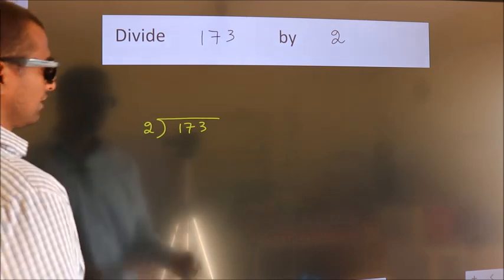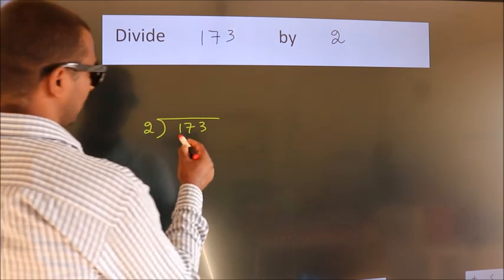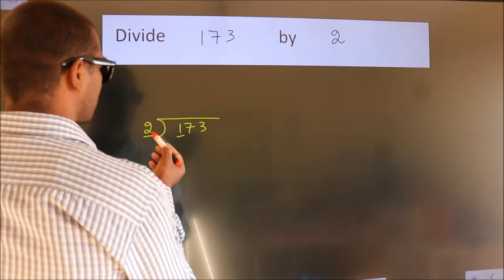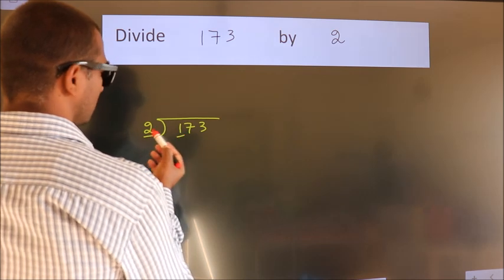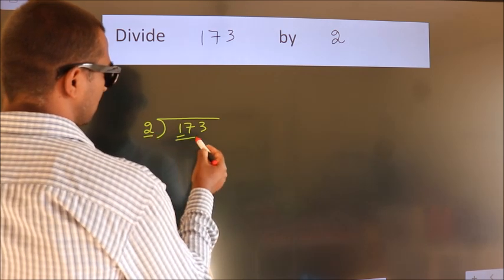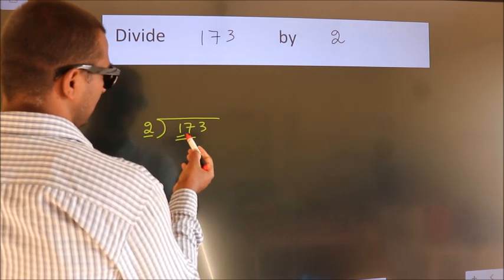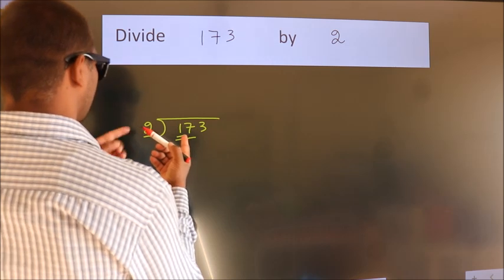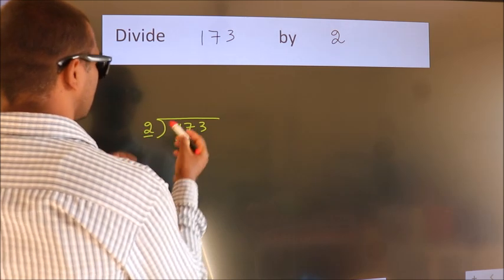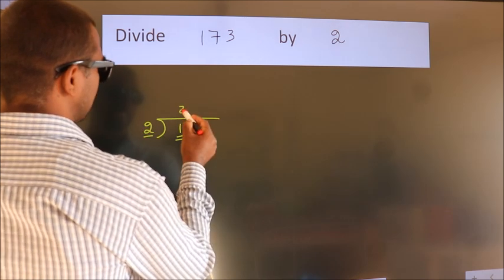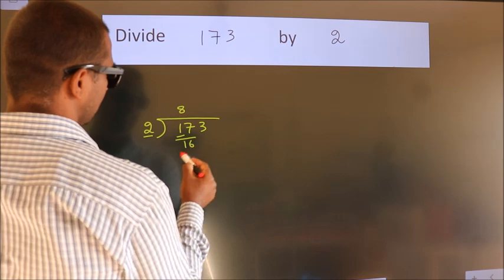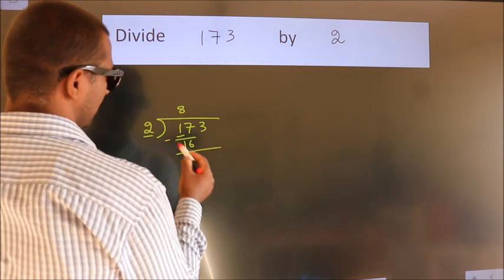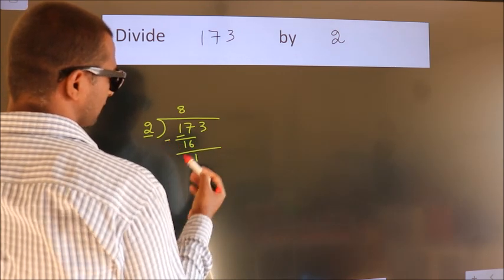Next, here we have 1, here 2. 1 is smaller than 2, so we should take 2 numbers, that's 17. A number close to 17 in the 2 times table is 2×8=16. Now we subtract and we get 1.